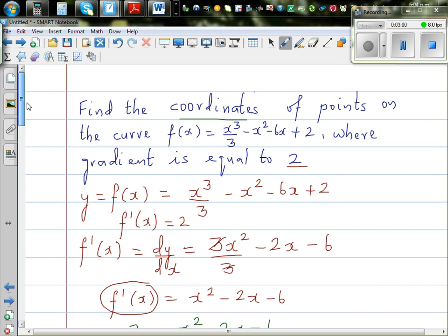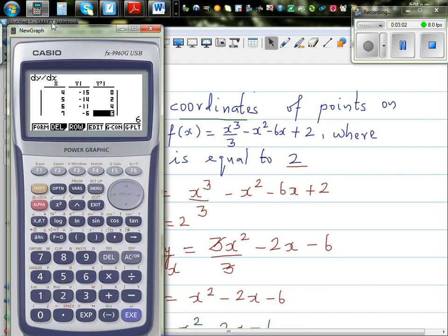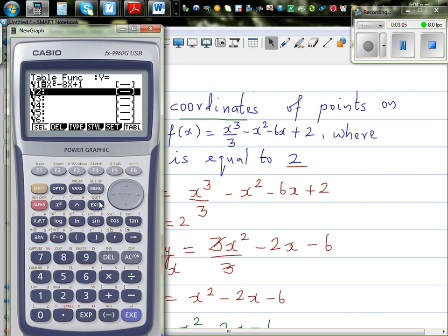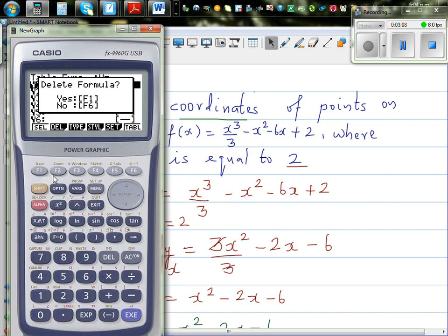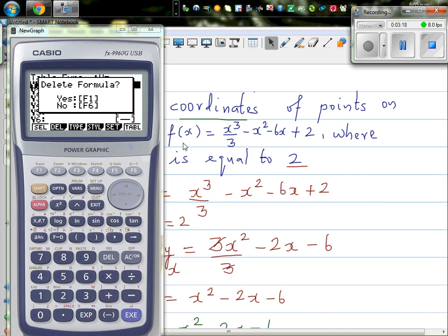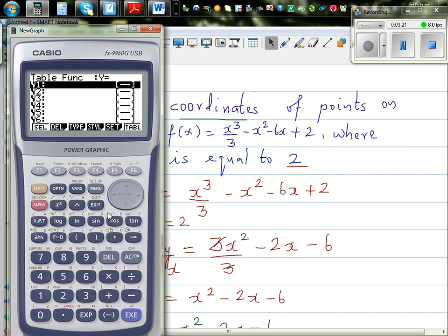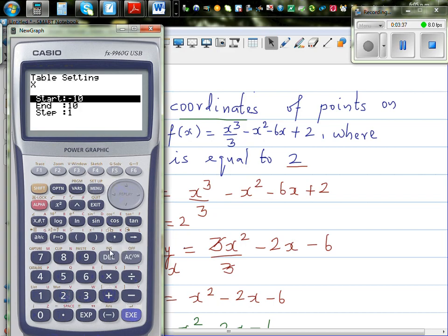So I'm going to use my calculator to get the y coordinate. Let me go back and type in the equation. Let me delete this and type in the equation. So I can give x cubed divide by 3 minus x squared minus 6x plus 2. I'll set my table from minus 5 to plus 5. So this will also confirm whether our answer is right.